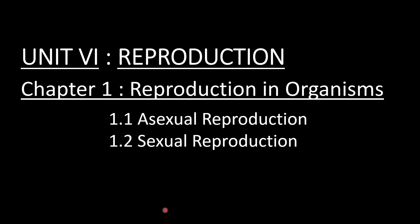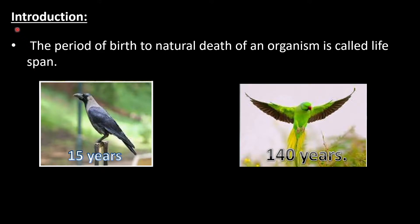Hello students, today we study Chapter 1: Reproduction in Organisms. Under this chapter there are two points: 1.1 Asexual Reproduction and 1.2 Sexual Reproduction. Both these points come under Chapter 1, which comes under Unit 6 Reproduction.